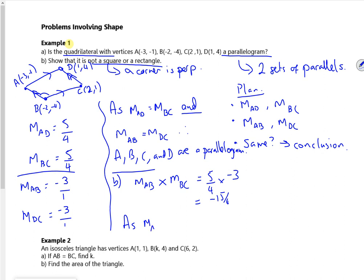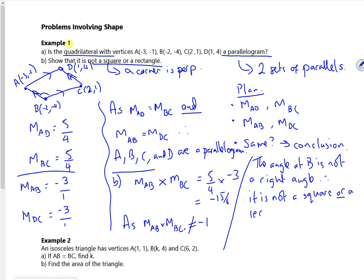So as M_AB times M_BC is not equal to -1, the angle at B is not a right angle, therefore it is not a square or a rectangle. You notice once again I've written the whole thing down.